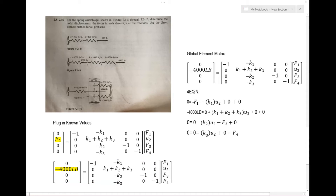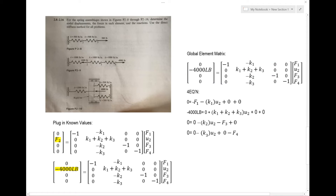The next thing I did is plug in the known value. Now you can see all the unknowns are on one side and all the known values are on the other. K1 is this value here, K2 is 500 pounds per inch, and K3 is this value here. So I know everything on the left-hand side, and these are my unknown values on the right.